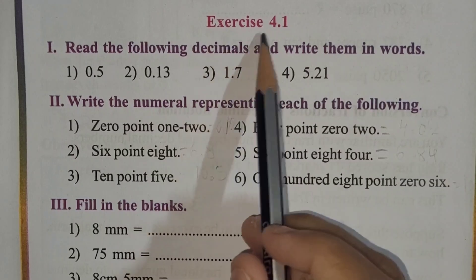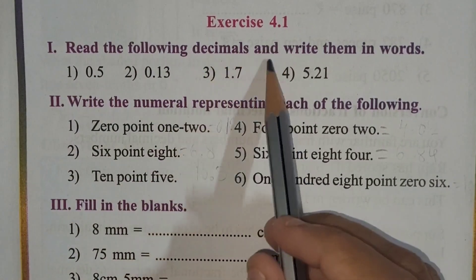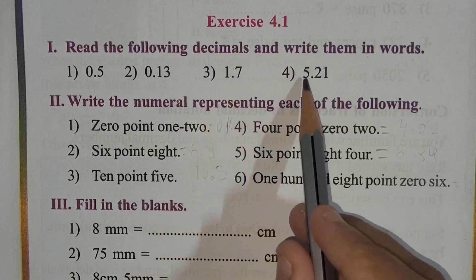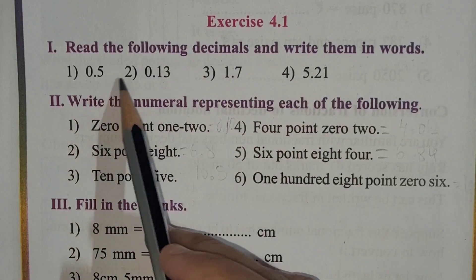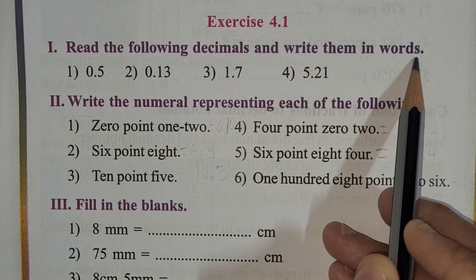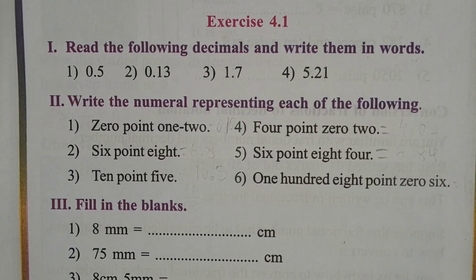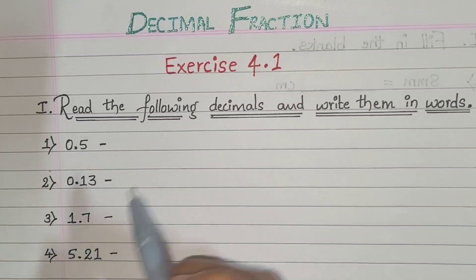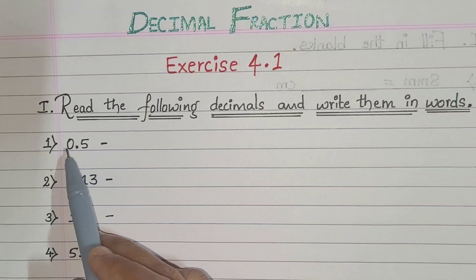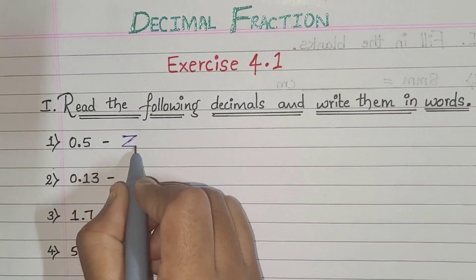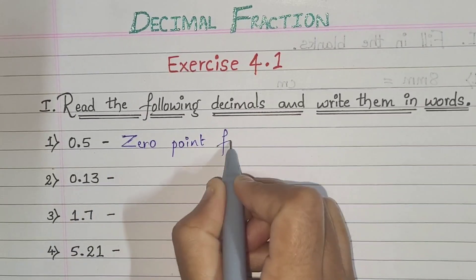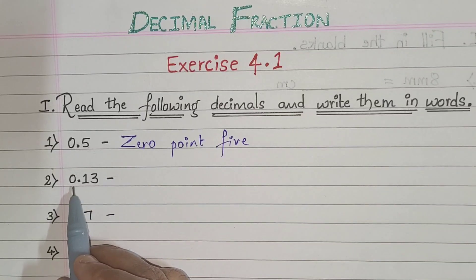Now let's move to the exercise part: Exercise 4.1 - Read the following decimals and write them in words. The decimals are: 0.5, 0.13, 1.7, 5.21. You have to write them in words. Let's do it. First one: 0.5 - write 'zero point five'.